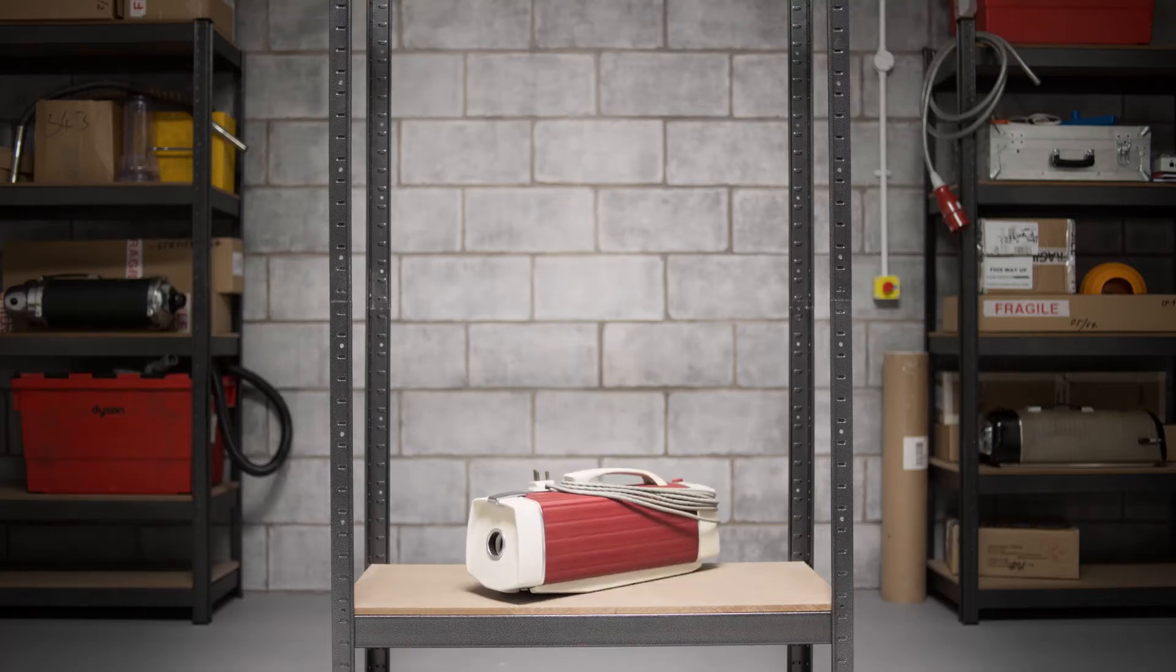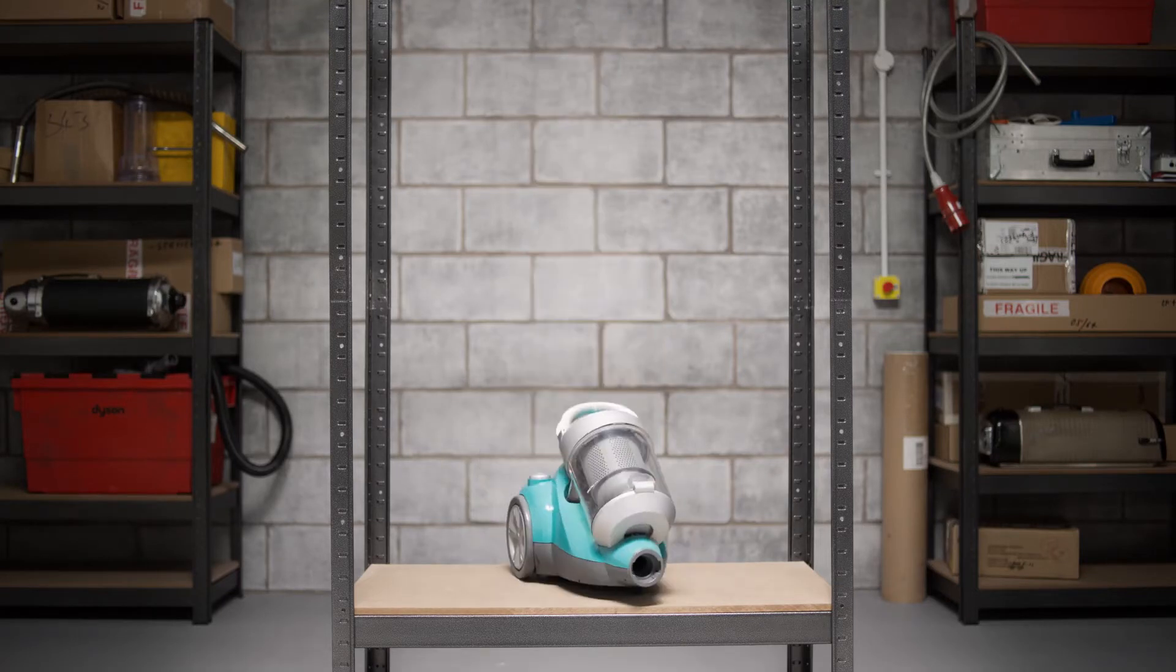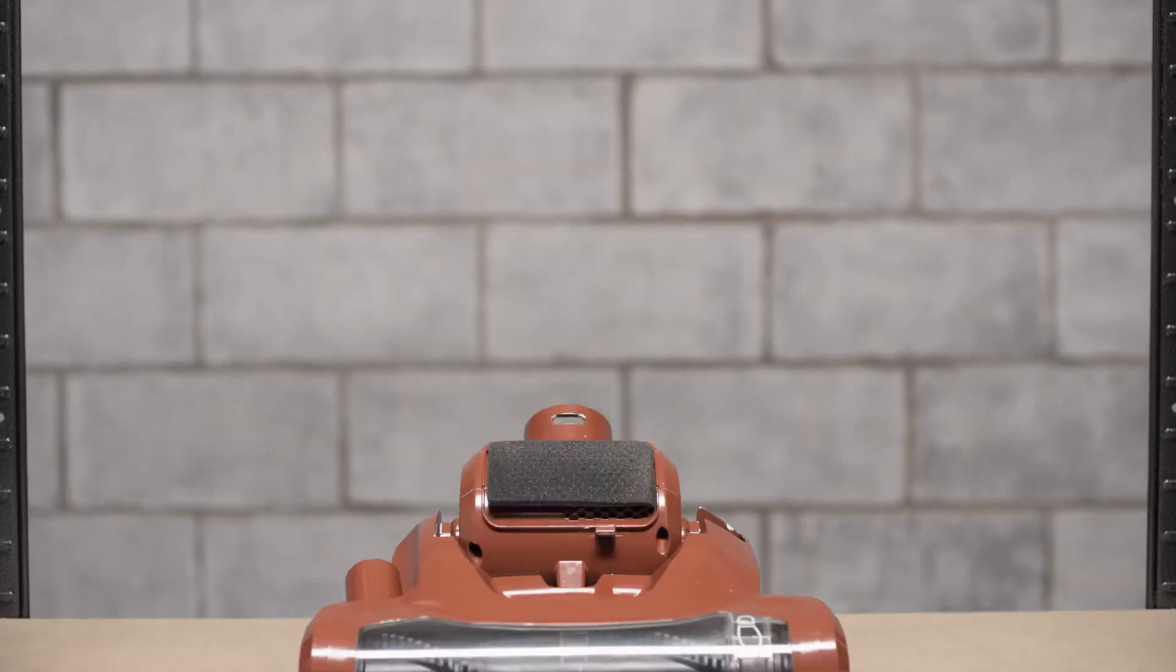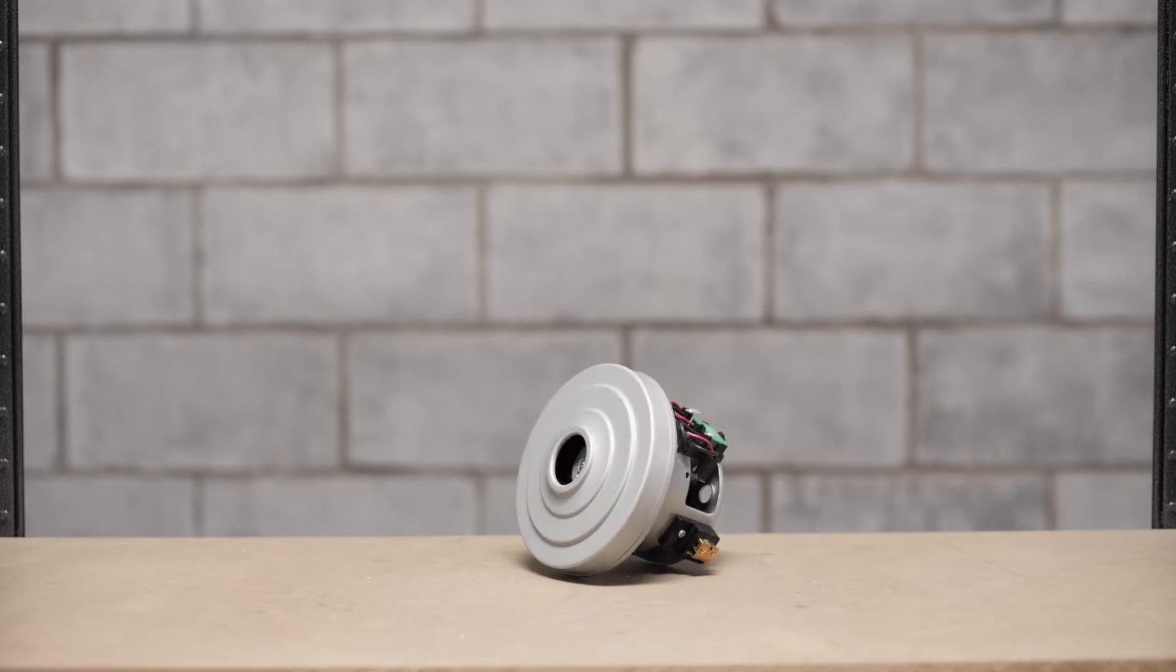Corded vacuums may look like they've moved on, but the motors inside them haven't really changed since they were invented over 160 years ago. They're big and heavy.